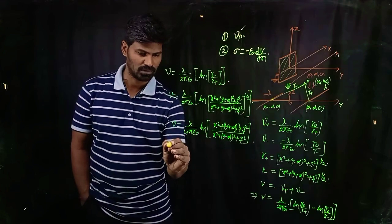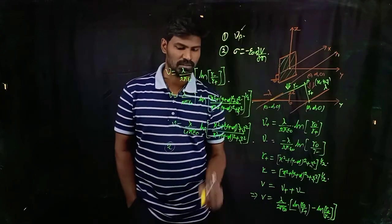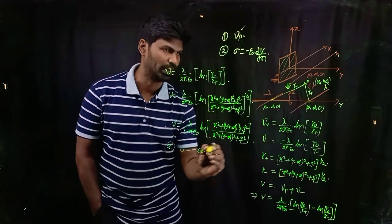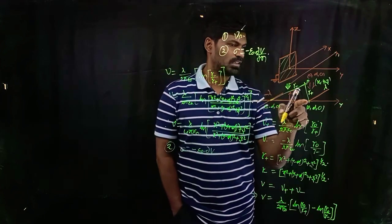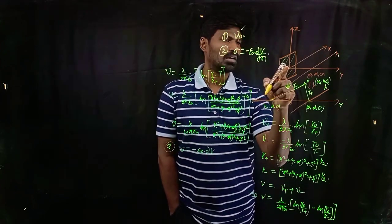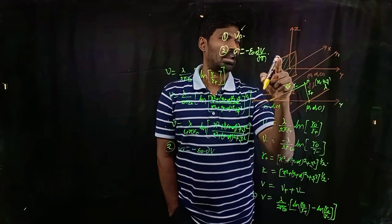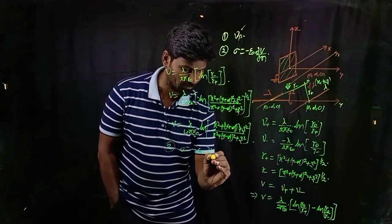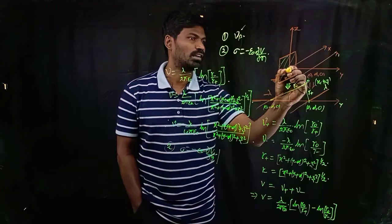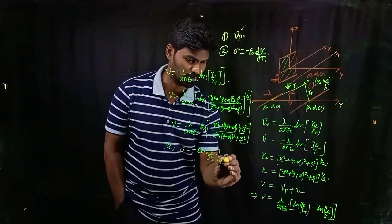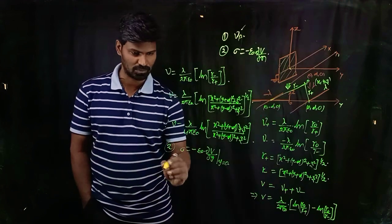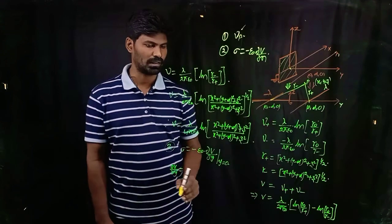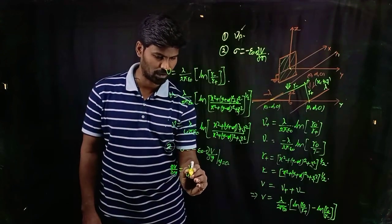Next, step 2 is calculating the surface charge density. Therefore, σ = −ε₀ · ∂V/∂n. Since the charge is placed along the y-axis and I want to calculate the charge density on the plane at y = 0, I should write this as ∂V/∂y, evaluated at y = 0. So first I will calculate ∂V/∂y.